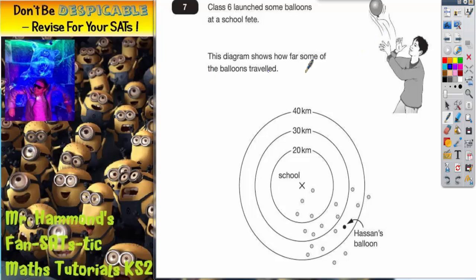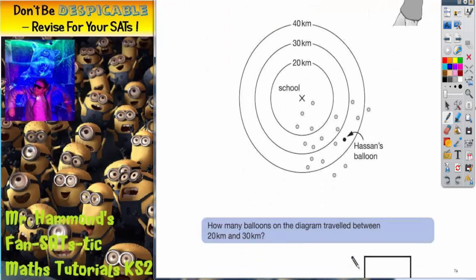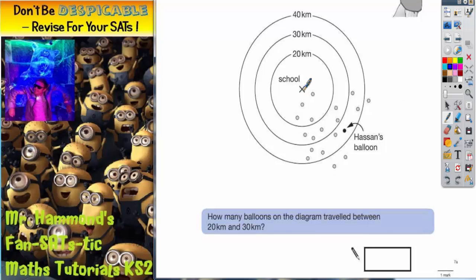So it says, this diagram shows how far some of the balloons travelled. So let's scroll down and have a look at the diagram. We've got the school which is the cross in the centre. This circle shows 20 kilometres, so anything within this circle has done 20 kilometres. Anything inside this circle has done 30 kilometres and anything inside this circle has done 40 kilometres.